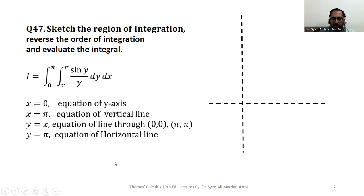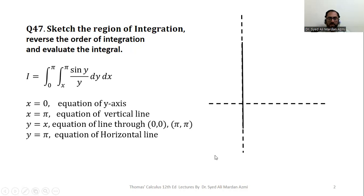To sketch the region of integration, always start with dashed lines — mark the x-axis and y-axis with a dashed line or light pencil first. After that, if the x-axis or y-axis is involved in your limits, make it dark. Here x is not involved in our boundaries but the y-axis is, since x = 0 is the equation of the y-axis, so I make it a dark line.